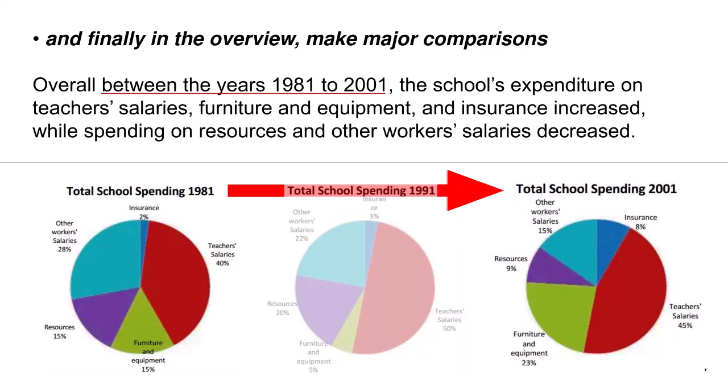And finally, in the overview, make major comparisons. Overall, between the years 1981 to 2001, the school's expenditure on teachers' salaries, furniture and equipment and insurance increased, while spending on resources and other workers' salaries decreased.